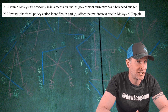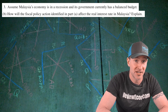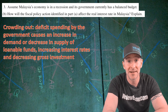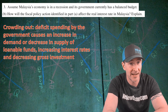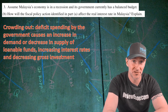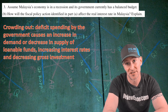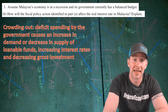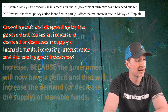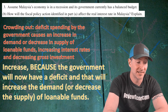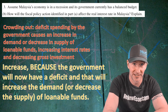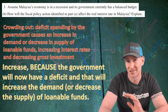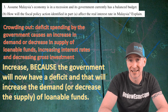For part B, we have to say how the policy we just identified will impact the real interest rate in Malaysia, and we have to explain. This question is all about the crowding out effect. The crowding out effect tells us that deficit spending by the government causes an increase in the demand or decrease in the supply of loanable funds, and that increases interest rates in the loanable funds market, decreasing gross investment. When the government increases spending or decreases taxes, it has to borrow to make up the difference, and that causes crowding out. So the answer is increase, because the government will now have a deficit, and that will increase the demand or decrease the supply of loanable funds. Remember to pick one — increasing the demand is the most common answer, but decreasing the supply also works. Don't give both, just pick one. If you have an answer something like that, you get your next point.